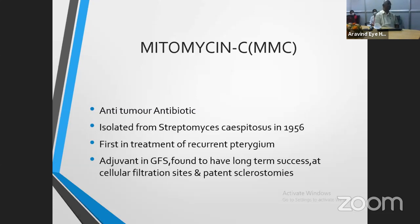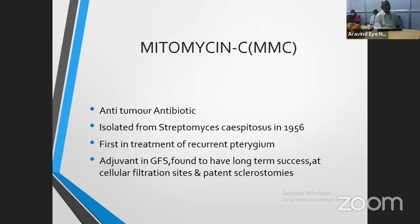The second important anti-metabolite, commonly used all over the world, is mitomycin C. Why is it more commonly used? Because it is a one-time application — not like 5-FU where you have to give multiple injections — and it is very simple. We must keep in mind that 5-FU is epitheliotoxic, but mitomycin is toxic to the endothelium — highly toxic. So patients with endothelial decompensation should not receive it. Also, whenever there is unintended anterior chamber entry during surgery, avoid using mitomycin — use it before entering the anterior chamber. Mitomycin is an anti-tumor antibiotic isolated from Streptomyces hispitensis in 1956.